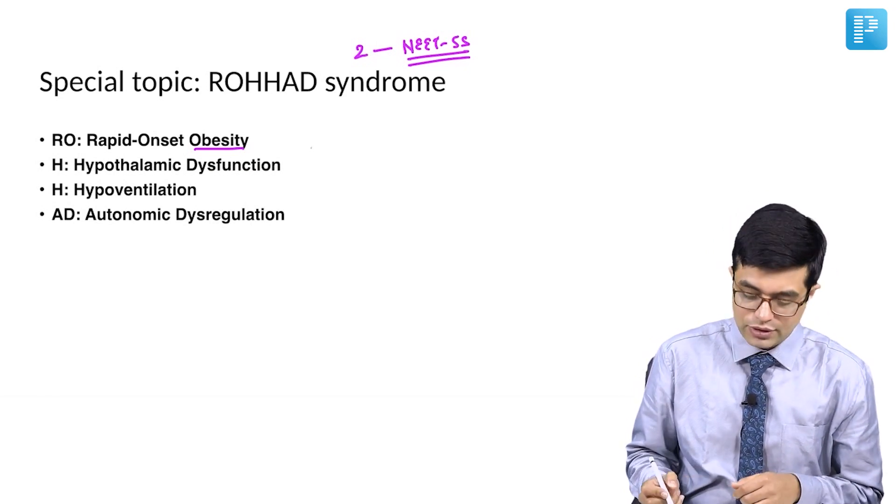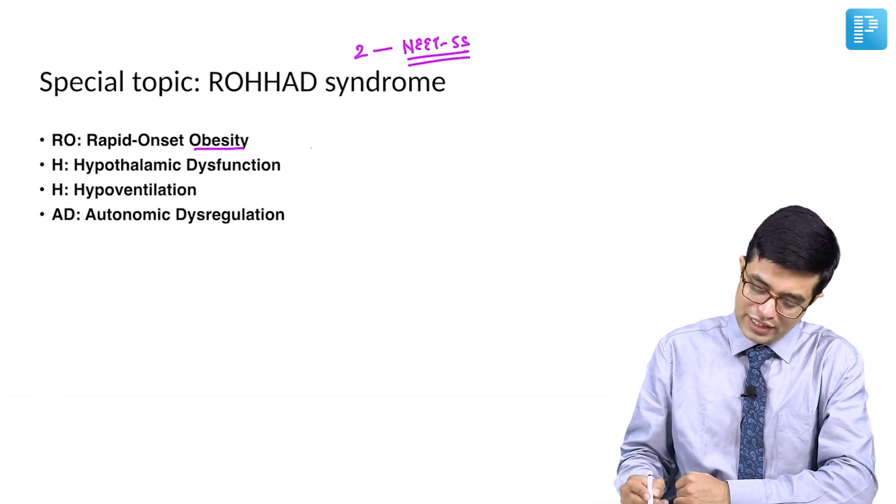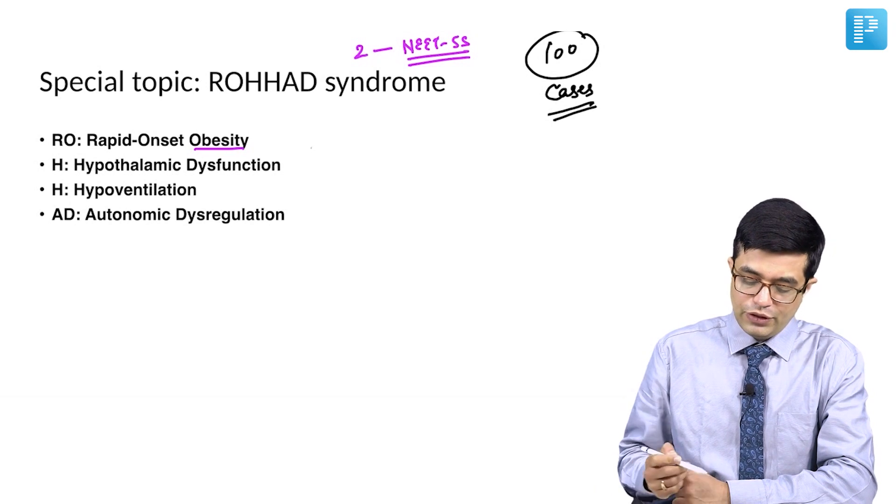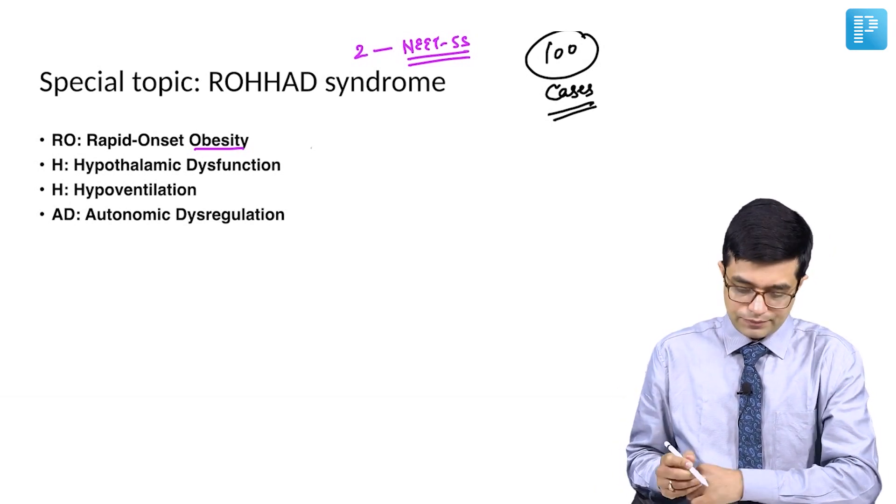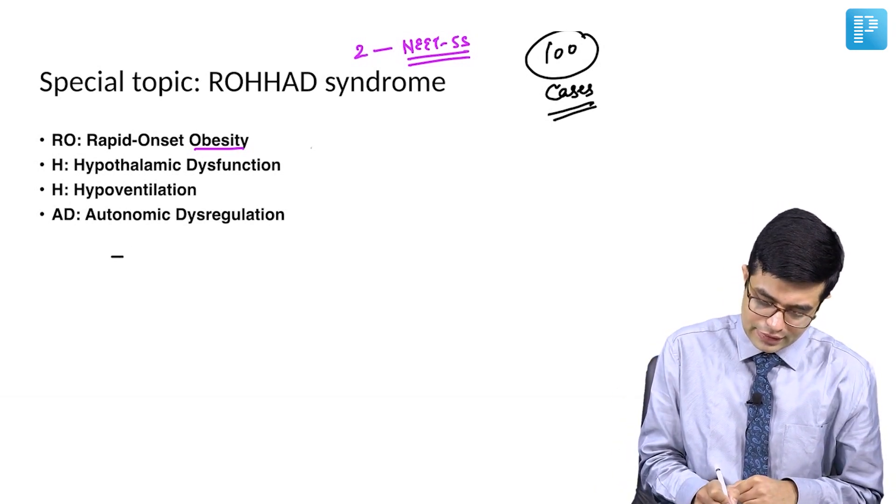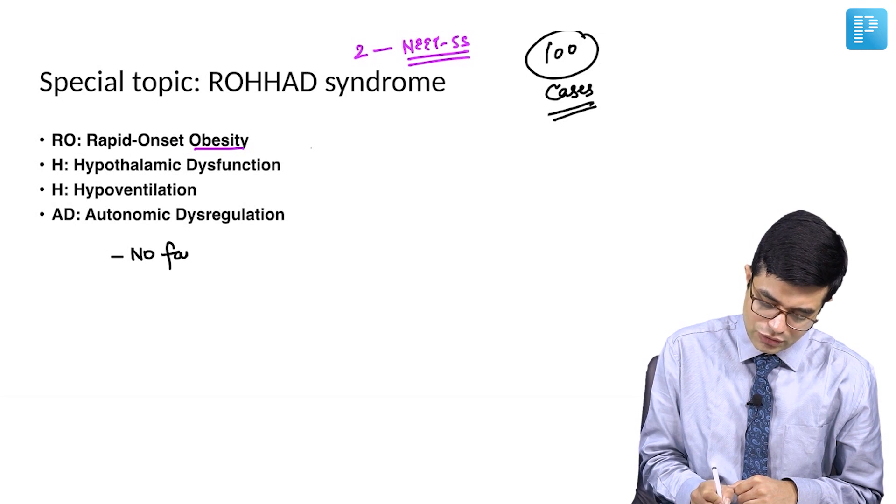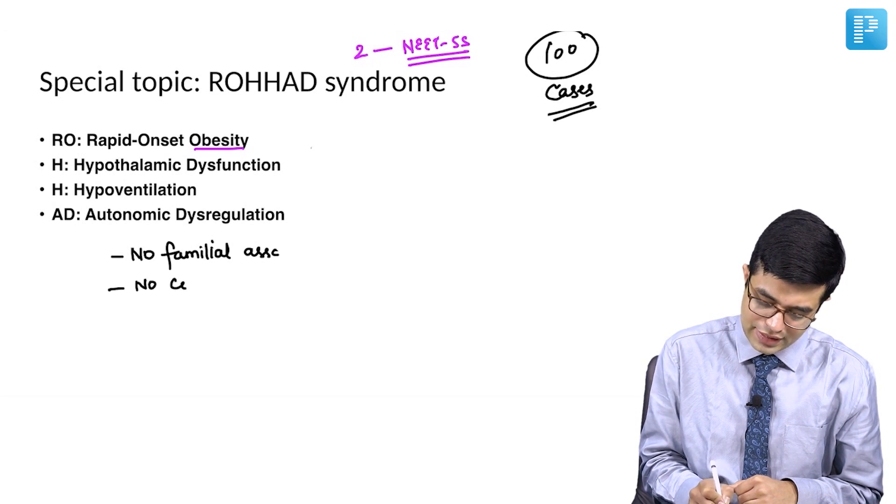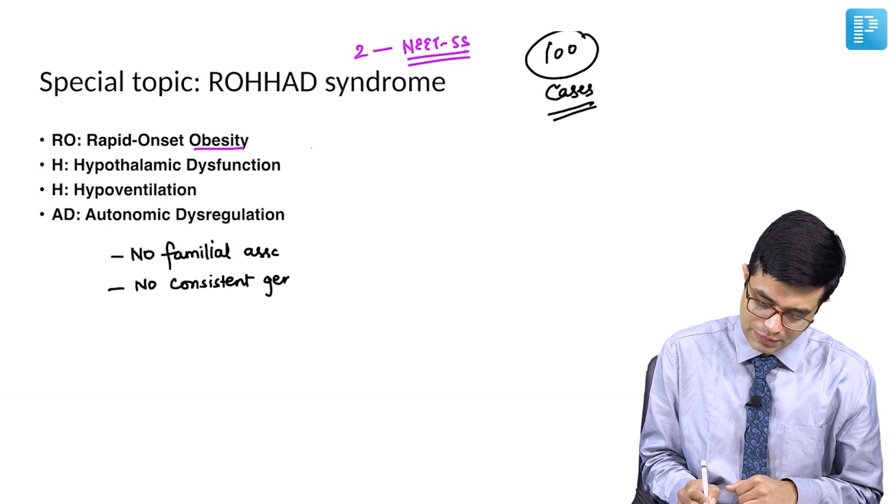It is a very poorly understood syndrome in which only in the literature maybe there are 100 cases which have been described. We do not know why it happens. There is no familial association and no consistent gene abnormality has been found.